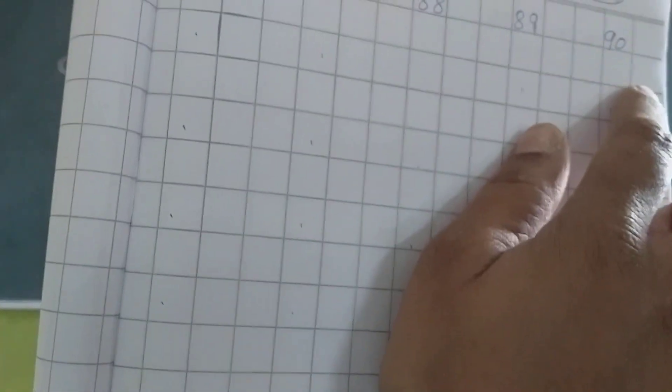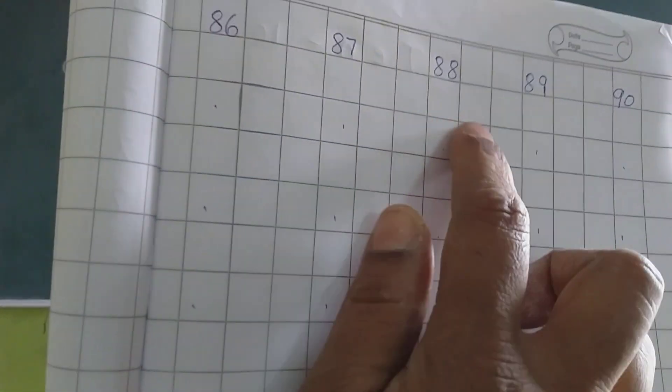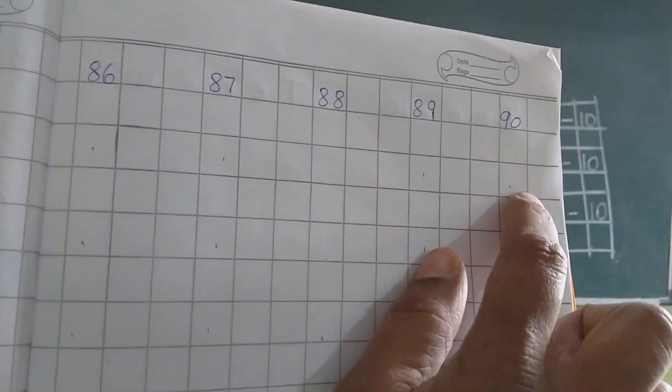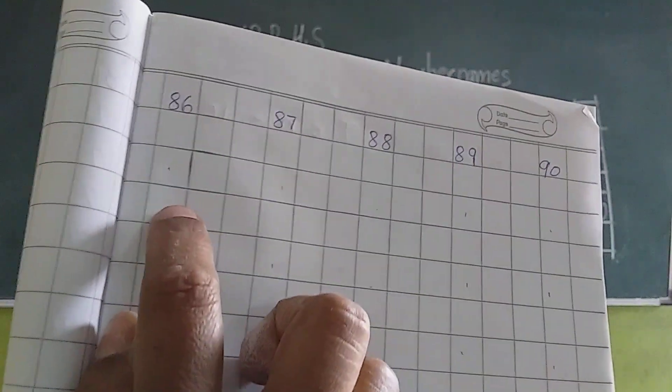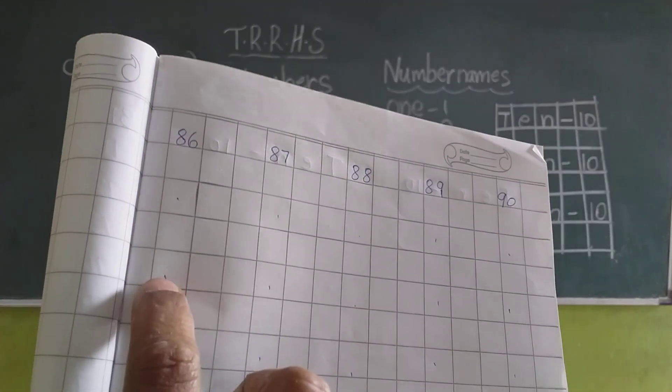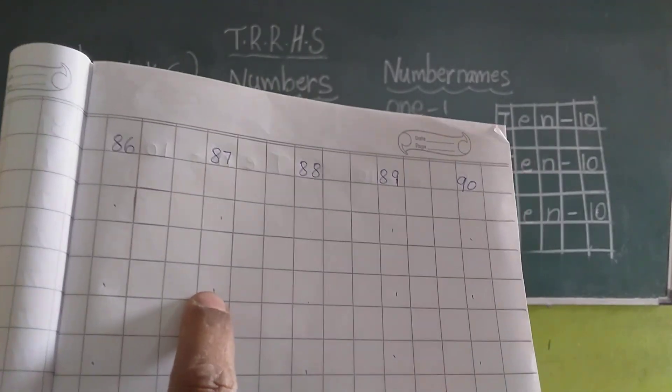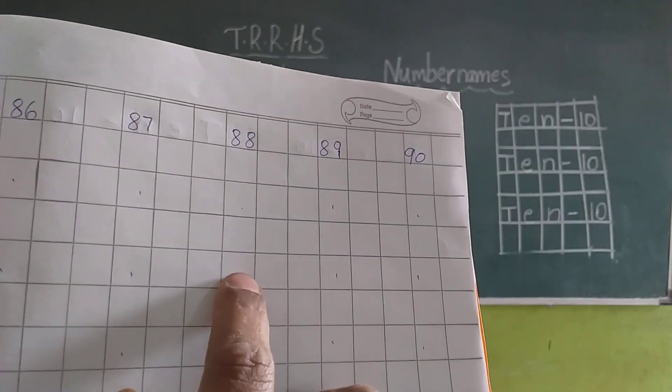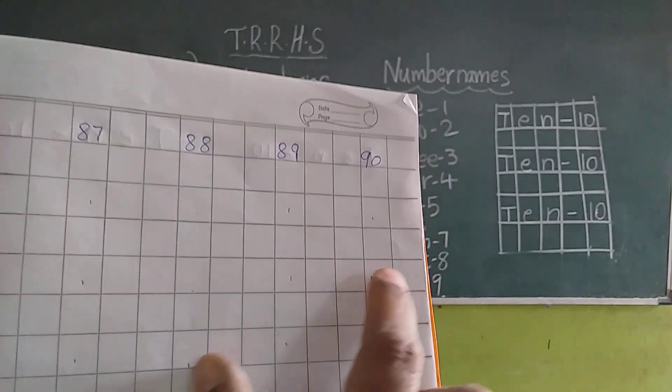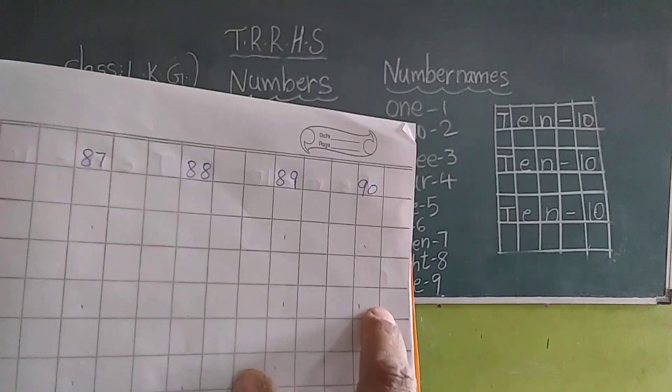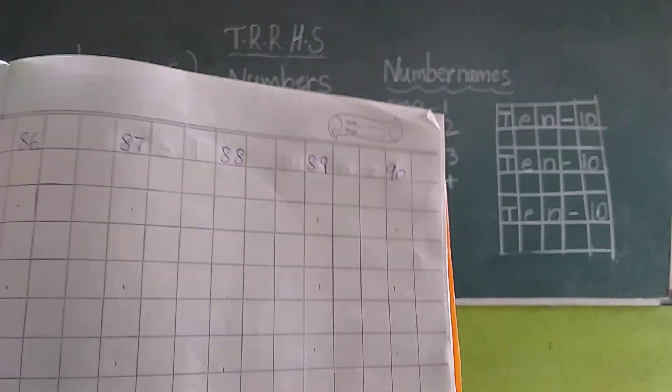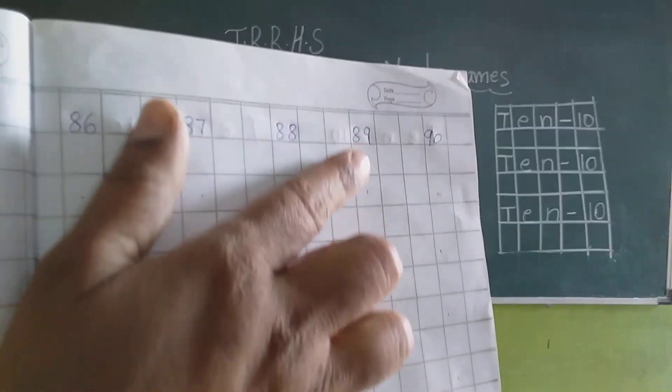Like this you have to write once and leave one line. Again write 86, 87, 88, 89, 90. Again leave one line. Write 86, 86, 87, 87, 88, 88, 89, 89, 90, 90. Like this you have to read numbers and write here. Complete the full page.